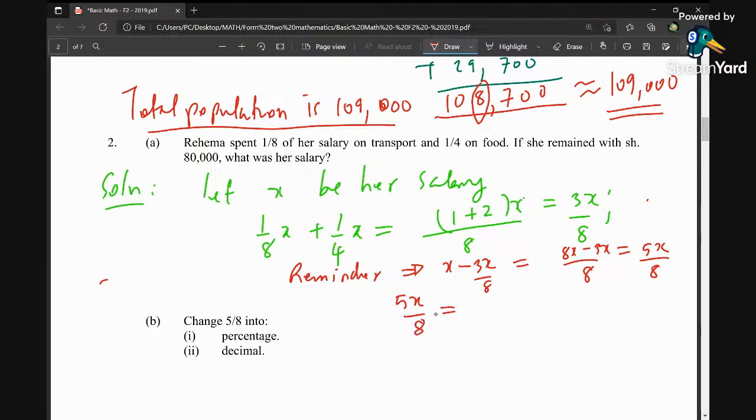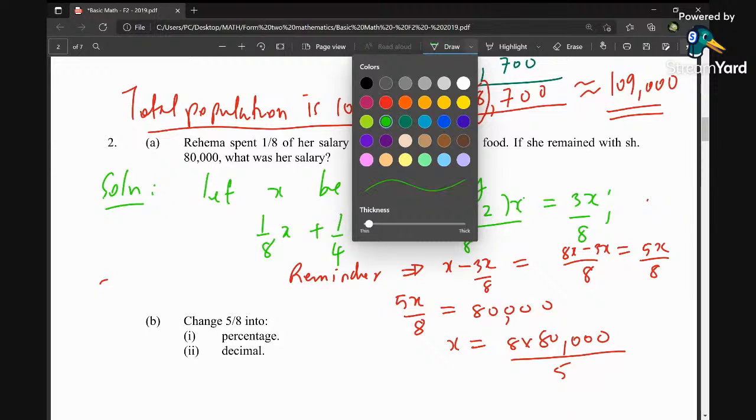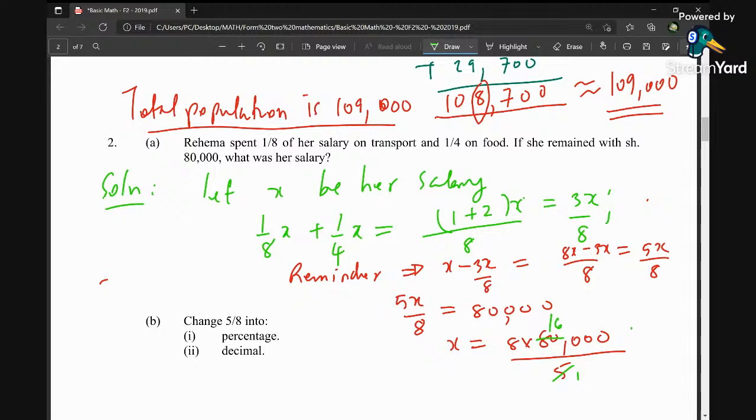So 5x over 8 equals 80,000. We are going to find the value of x, so x will be equal to 8 times 80,000 divided by 5. When we divide it by 5, it is 16. Take 16 times 8, it is 48, 6 times 1, times 8 is 8, 80 plus 4 is 12, 128,000. So her salary was 128,000 shillings.